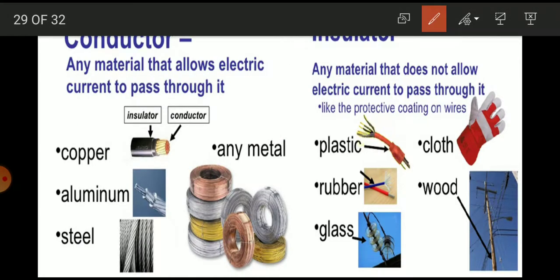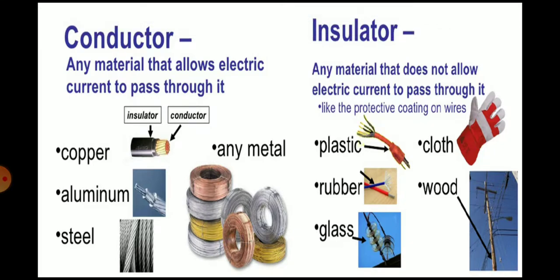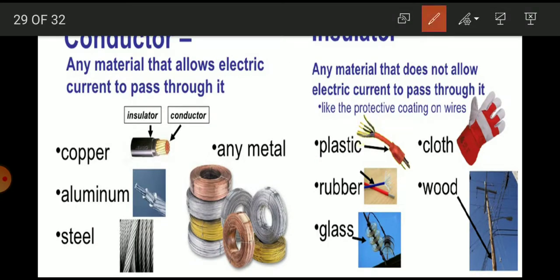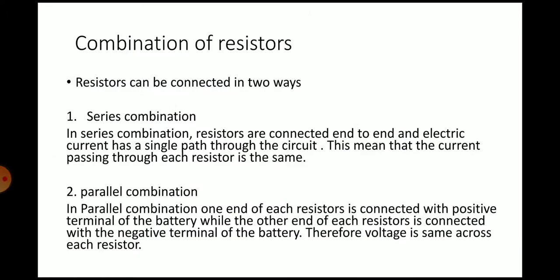Conductors are better because they have free electrons. The free electrons carry energy from one place to another. According to free electron theory, if a material has more free electrons it will be a better conductor of electricity and heat. Any material that allows electric current to pass through it is called a conductor; any material that does not allow electric current to pass through it is called an insulator.